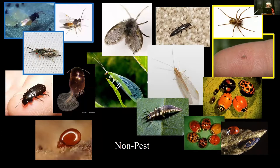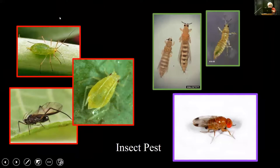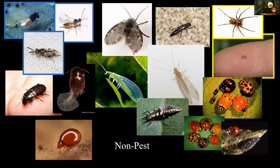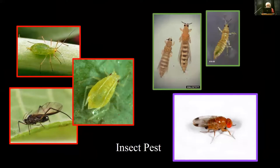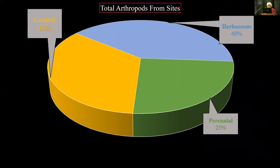We found many non-pest insects — many of them are beneficials. The main ones include predatory wasps and spiders. Among the pest insects, spotted wing drosophila was never found; we did find aphids and thrips. Overall across all 16 weeks at nine locations, the herbaceous — taller grasses — had over 40% of the insects found; the perennial areas with trees and arborvitae had about 25%; and the control areas were at 35%.